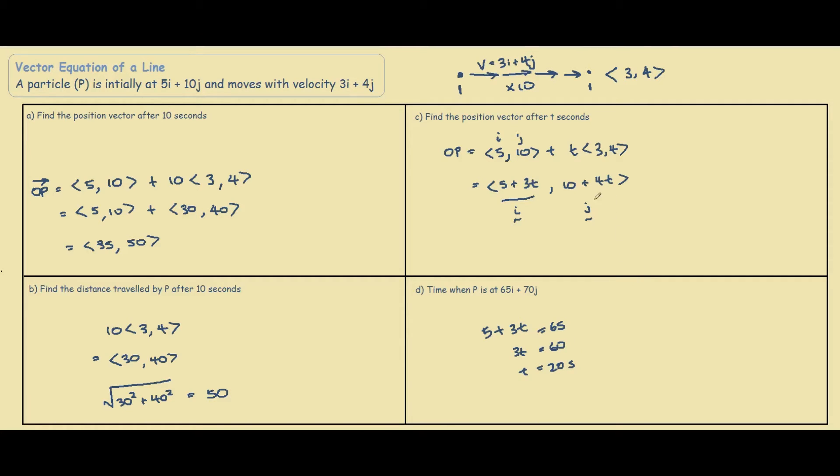Similarly, if we solve it for the j component, we have 10 plus 4t equals to 70. And then we solve this, 4t equals to 60, therefore t equals to 20 seconds. So after 20 seconds, the particle will be at position 65i plus 70j.